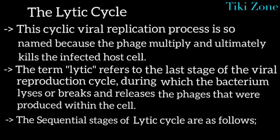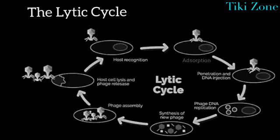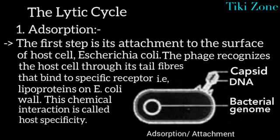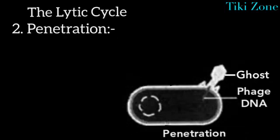The first stage of the lytic cycle is host recognition and adsorption, or attachment. The T4 phage virus attaches to the surface of the host cell, Escherichia coli. The phage recognizes the host cell through its tail fibers, which bind to specific receptors — lipoproteins — on the E. coli cell wall. This chemical interaction is called host specificity.